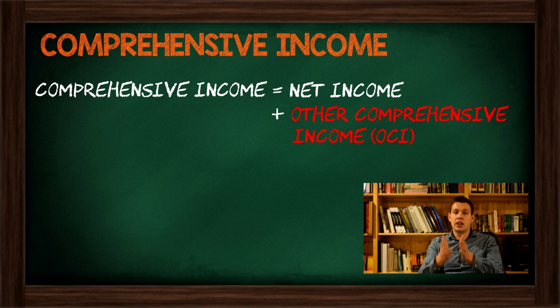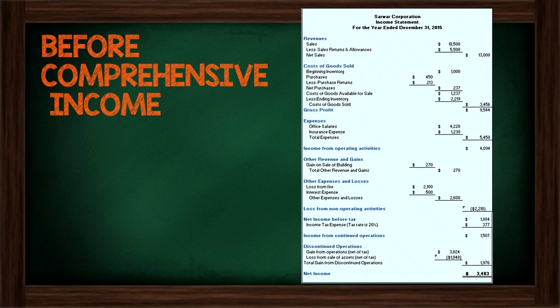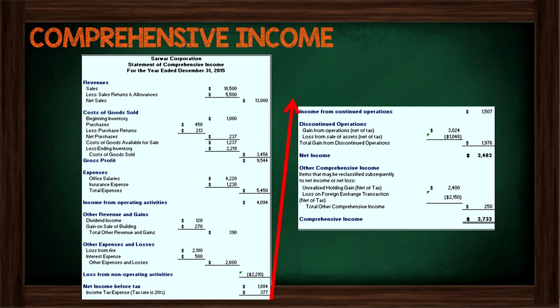Comprehensive income equals net income plus other comprehensive income. Now let's look at what our income statement is going to look like when we incorporate this comprehensive income calculation. The income statement before comprehensive income looks the same as you've seen before — exactly the same as the private income statement. Now, this is what it looks like when we add in comprehensive income. There are two differences you're going to notice. First, the title of the statement actually changes — we no longer call this an income statement anymore.